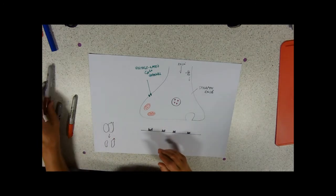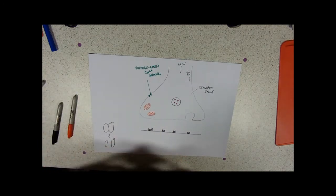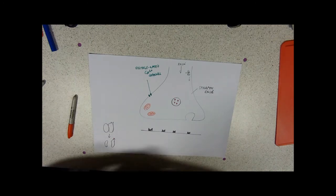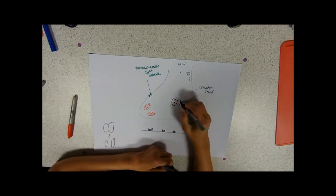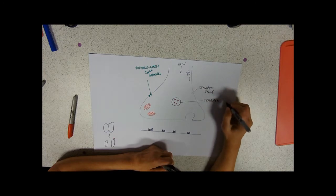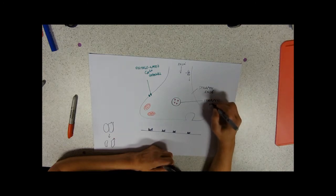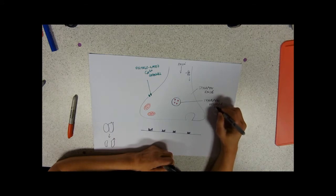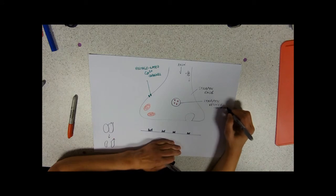This in the middle represents what we call a synaptic vesicle. Now these only occur in synaptic knobs, so they only occur on one side of the synapse. And these contain a neurotransmitter.